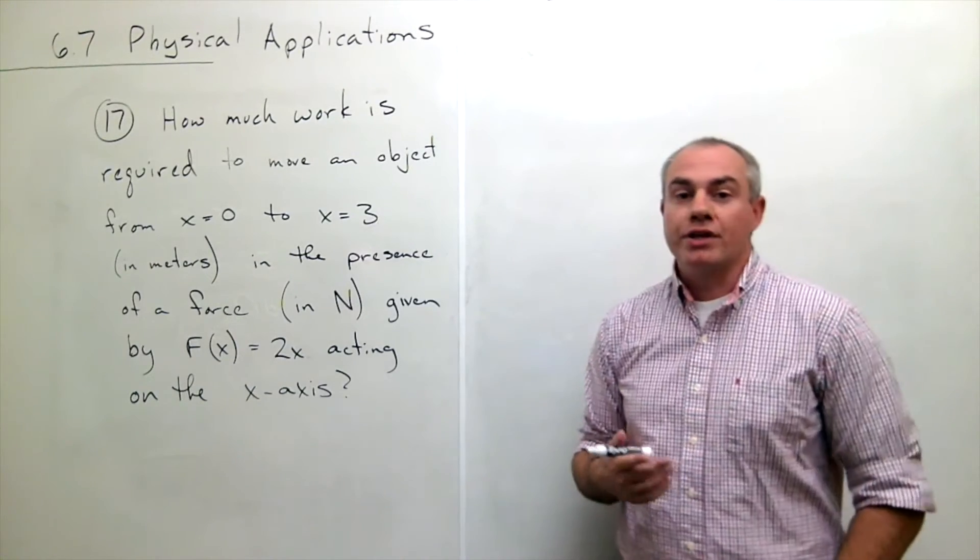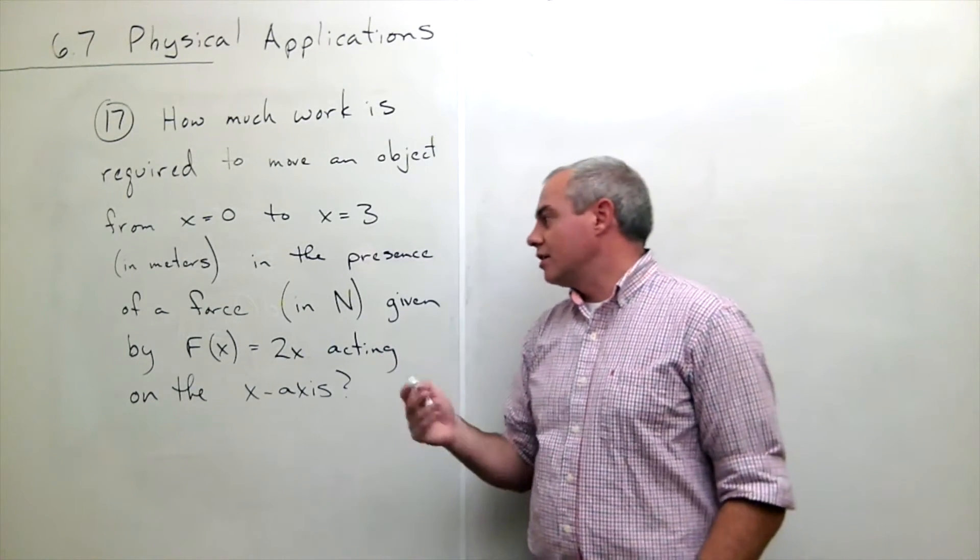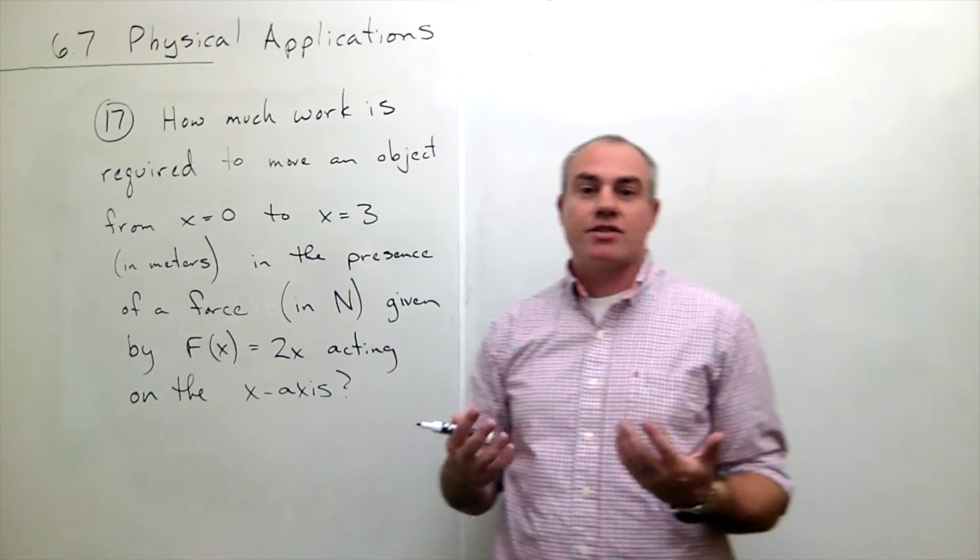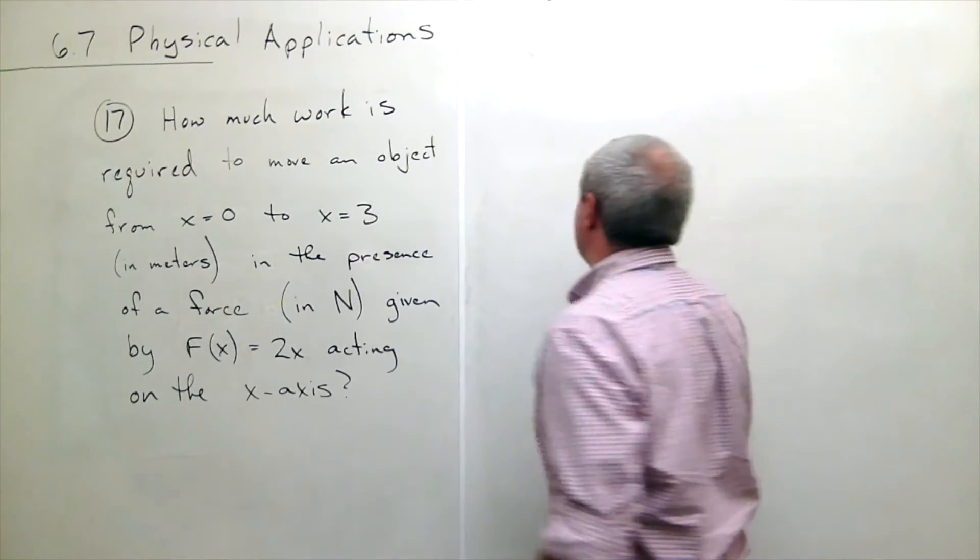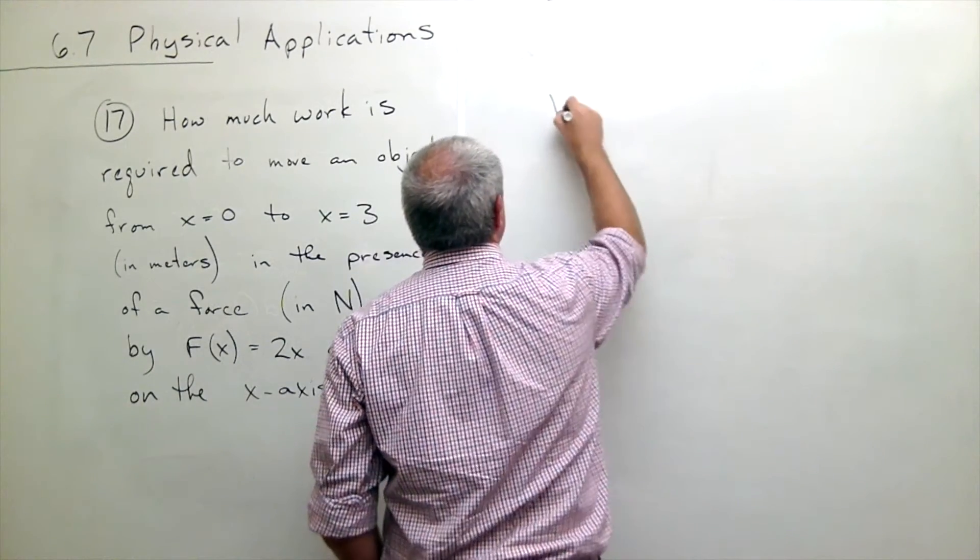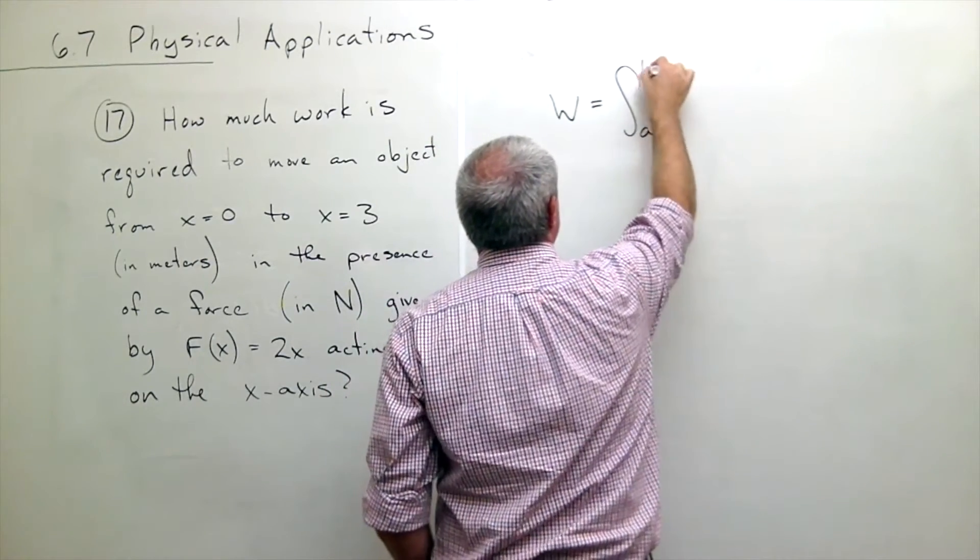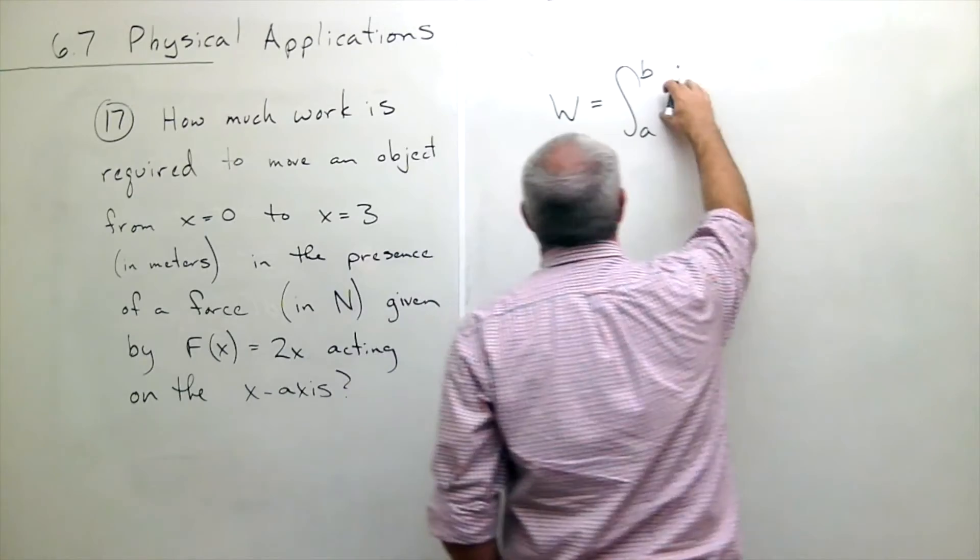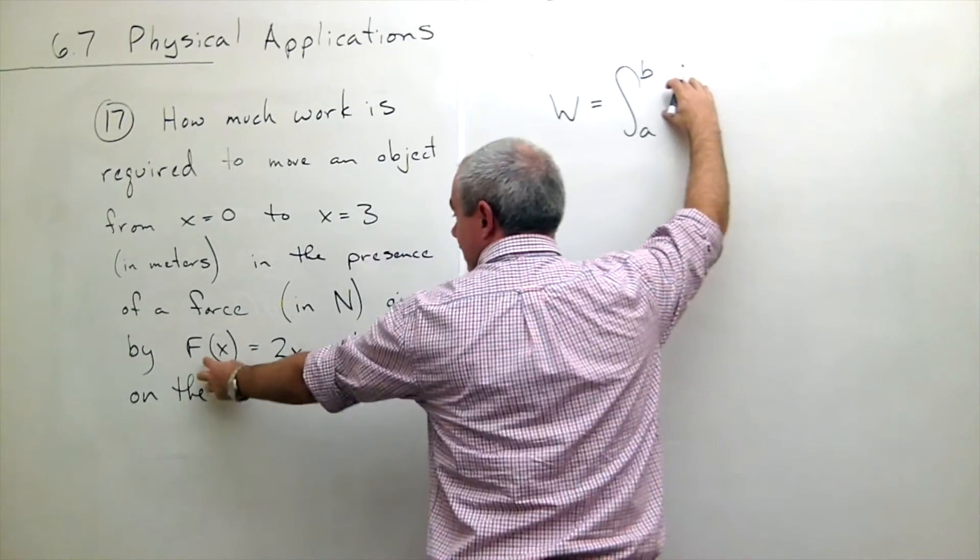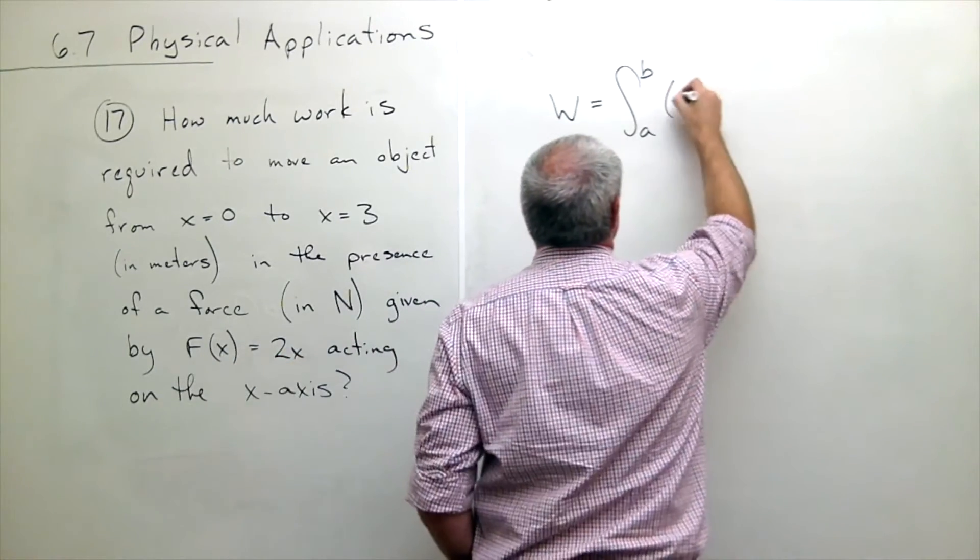We know that work is force over a distance, so let's look at our formula for work. Work is, over some distance from a to b, we have some force, and in this case the force is 2x.